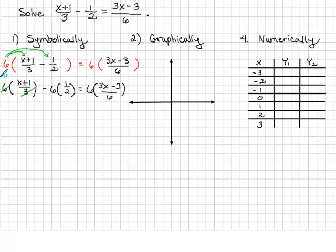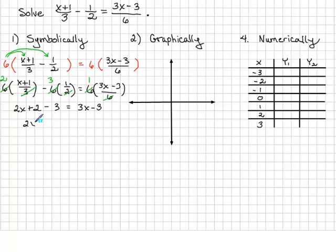We divide 3 into 6 to get 2, 2 into 6 to get 3, and 6 into 6 to get 1. Then we distribute and multiply, and combine like terms.